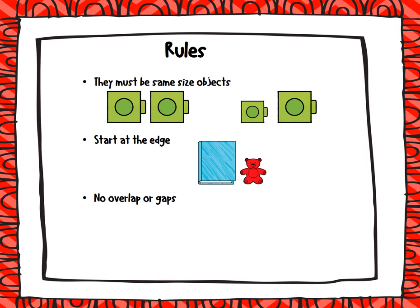Another rule is that it can't overlap or have any gaps. So that means that whatever object you're going to use to measure, it can't be so super close to each other where it's going to overlap each other.